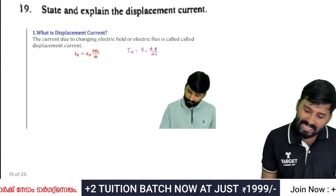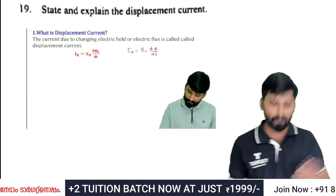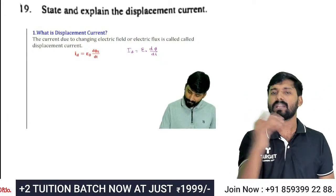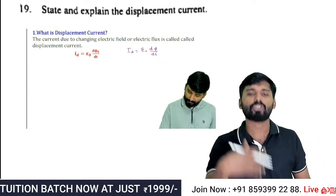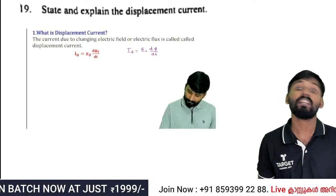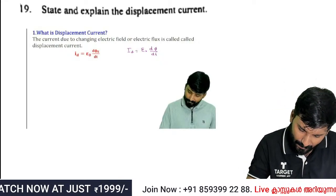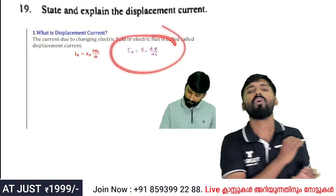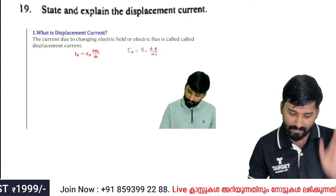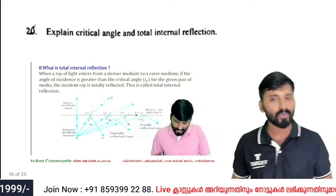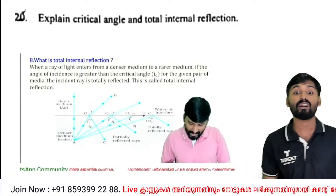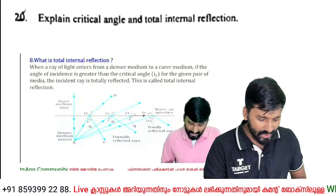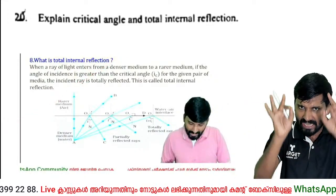Explain displacement current and the variation of electric flux. Total internal reflection occurs beyond the critical angle — when the angle of incidence is greater than the critical angle, light reflects back into the denser medium.